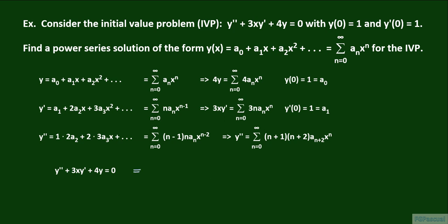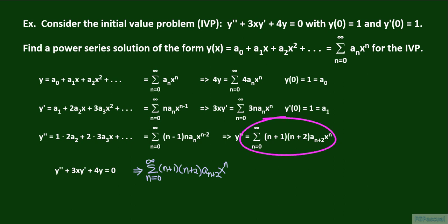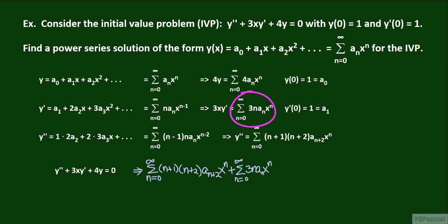The differential equation in power series form becomes: the sum from n equals 0 to infinity of the quantity n plus 1 times the quantity n plus 2 times a sub n plus 2 times x to the nth power, plus the sum from n equals 0 to infinity of 3n times a sub n times x to the nth power, plus the sum from n equals 0 to infinity of 4 a sub n times x to the nth power, all equal to 0.